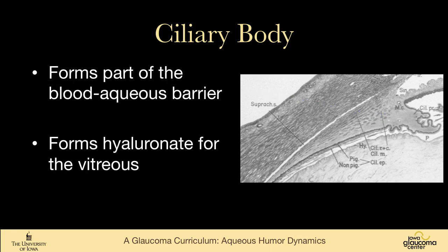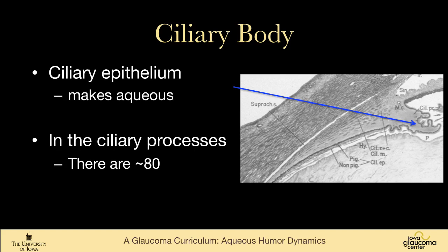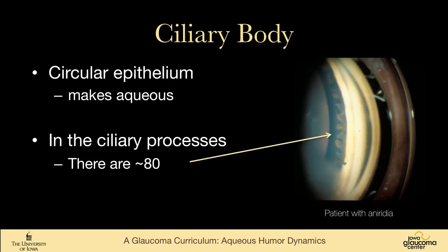The ciliary body is part of the blood aqueous barrier, and it also forms hyaluronate for the vitreous. The ciliary epithelium makes the aqueous humor. It consists of ciliary processes, of which there are about 80. This is a slide of a patient with aniridia — in aniridic patients there's just a little stub of iris, but it gives you an uncommonly good view of these ciliary processes.